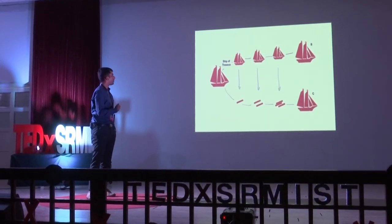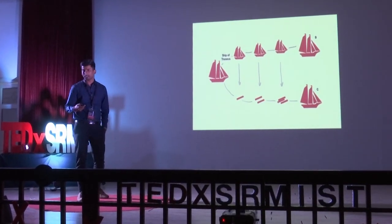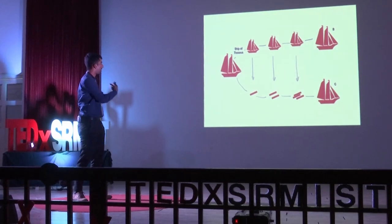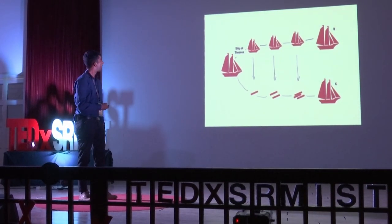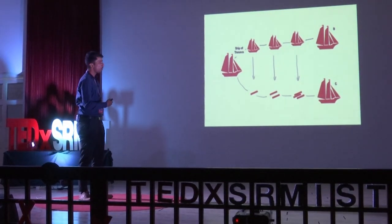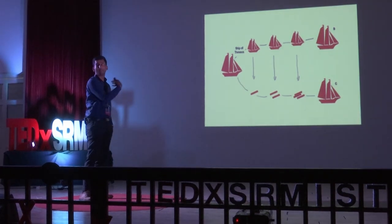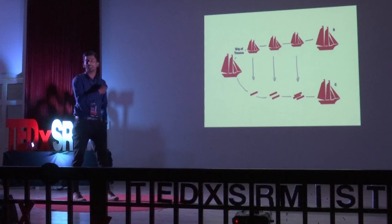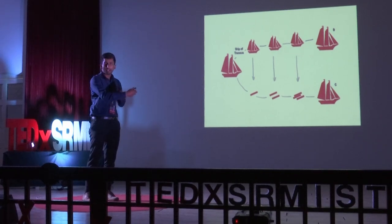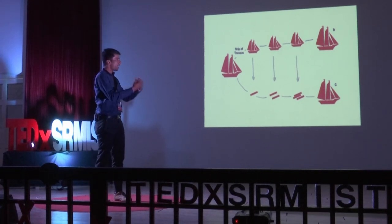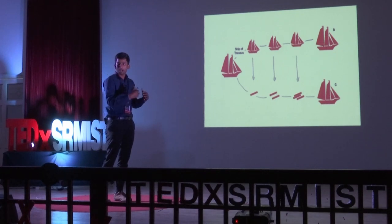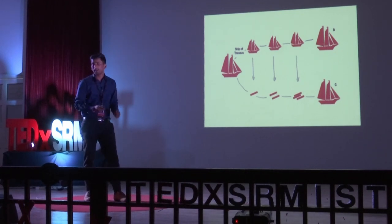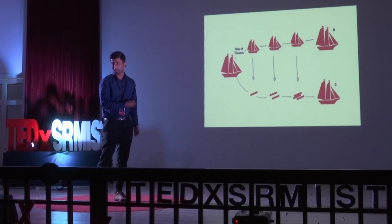Many of you would have heard about it — it's called the Ship of Theseus. It's a ship with multiple components. What I do is remove certain components and replace them. I start removing one component, then the next. Over a period of time, if I remove all these components and replace them with completely new components, the question is: is it the same old ship or is it a new ship?